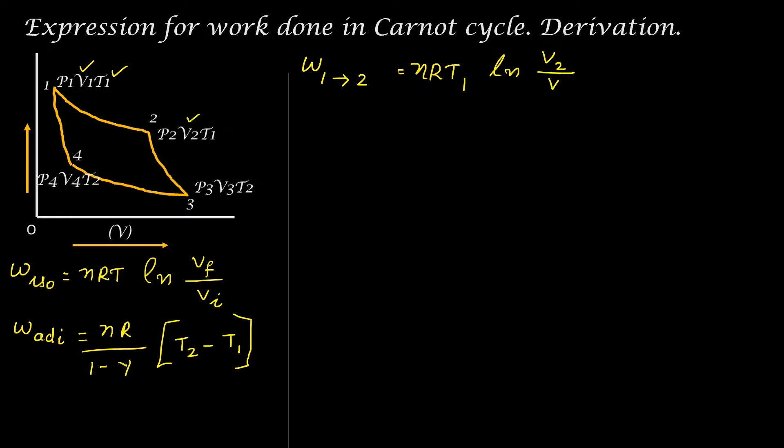Work done 2 to 3: it is adiabatic expansion, so the expression we have to use is nR divided by (1 minus gamma) into (T2 minus T1). I have already posted a video on derivation of work done for isothermal and adiabatic processes. If you have not watched that video, click the i button in order to watch that. For these two steps it is expansion work, so work is positive.